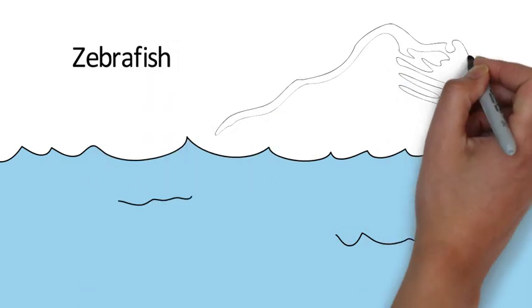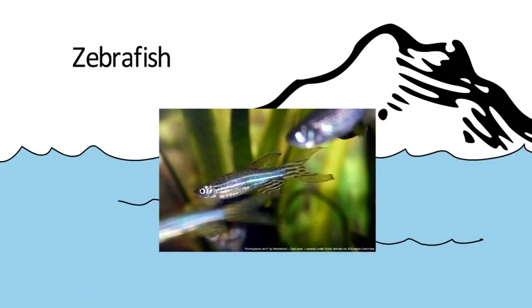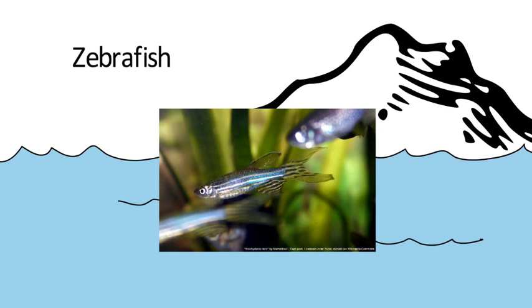These small fish, which originally come from the Himalayas, have become an important vertebrate model organism in genetic research over the past decade.